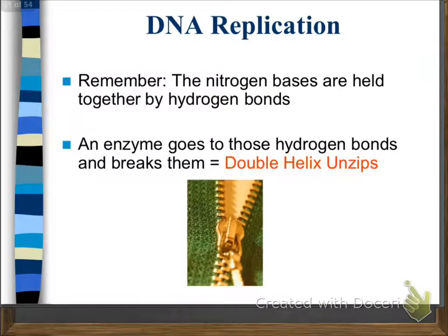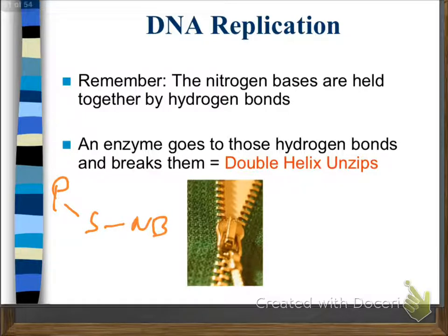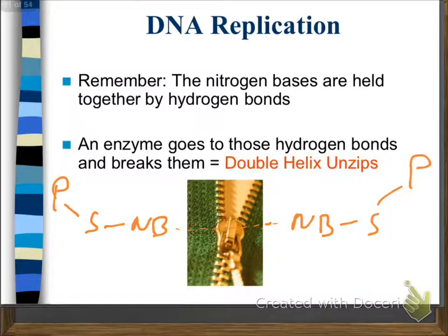Hopefully you got that right. In order to replicate, remember that DNA is made up of a phosphate group attached to a sugar, attached to a nitrogen base. On the other side, we have another nitrogen base attached to a sugar, attached to a phosphate group. The bond right in the middle is a hydrogen bond, and this bond needs to be snipped or unzipped in order for DNA to open itself up to replicate.